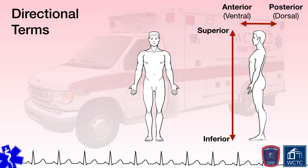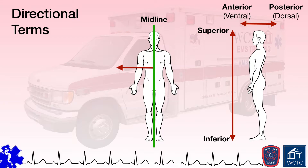While the terms ventral and dorsal could be used for anterior and posterior respectively, those terms are used more frequently when referring to the anatomy of other animals, not humans. Referencing the midline, the mid-sagittal plane, as you move away from the midline, features further away from the midline are lateral to those that are closer. Inversely, features that are closer to the midline are medial to those that are further away.